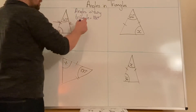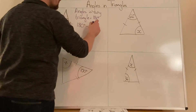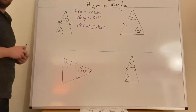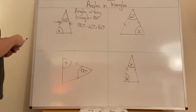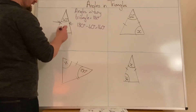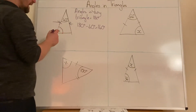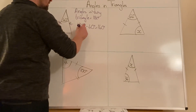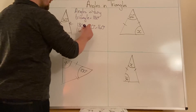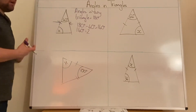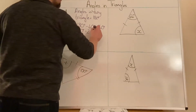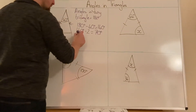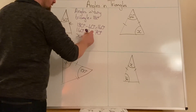So we're going to take away 40, which equals 140 degrees. That means these two angles, which are the same, add up to 140. Since they're the same, we do 140 degrees divided by two because they're equal, and that equals 70 degrees. So x equals 70 degrees.